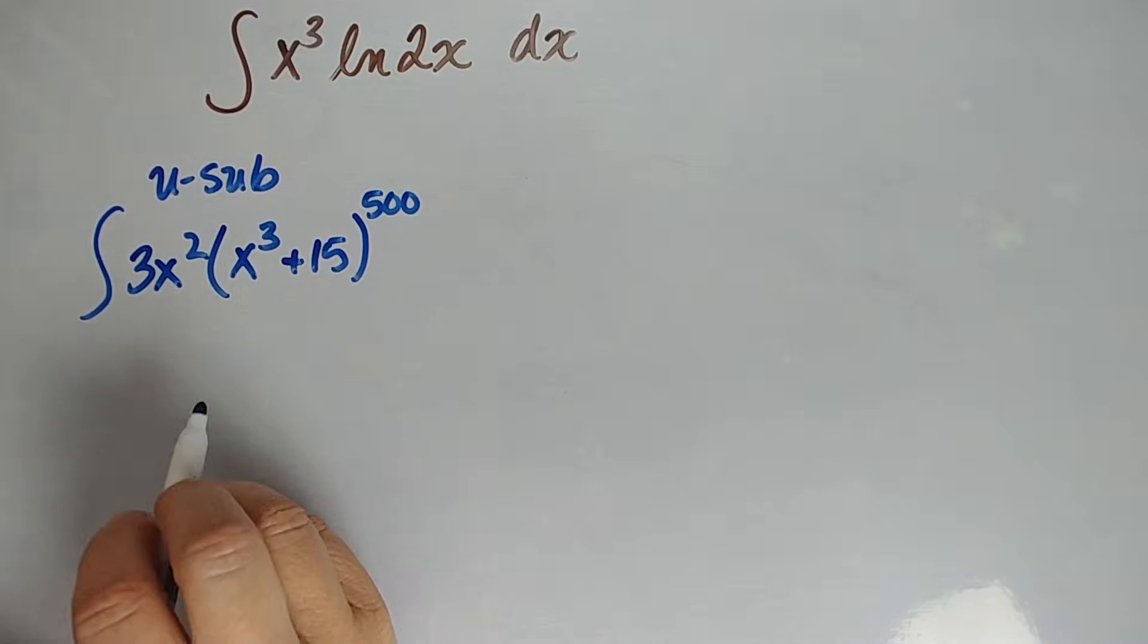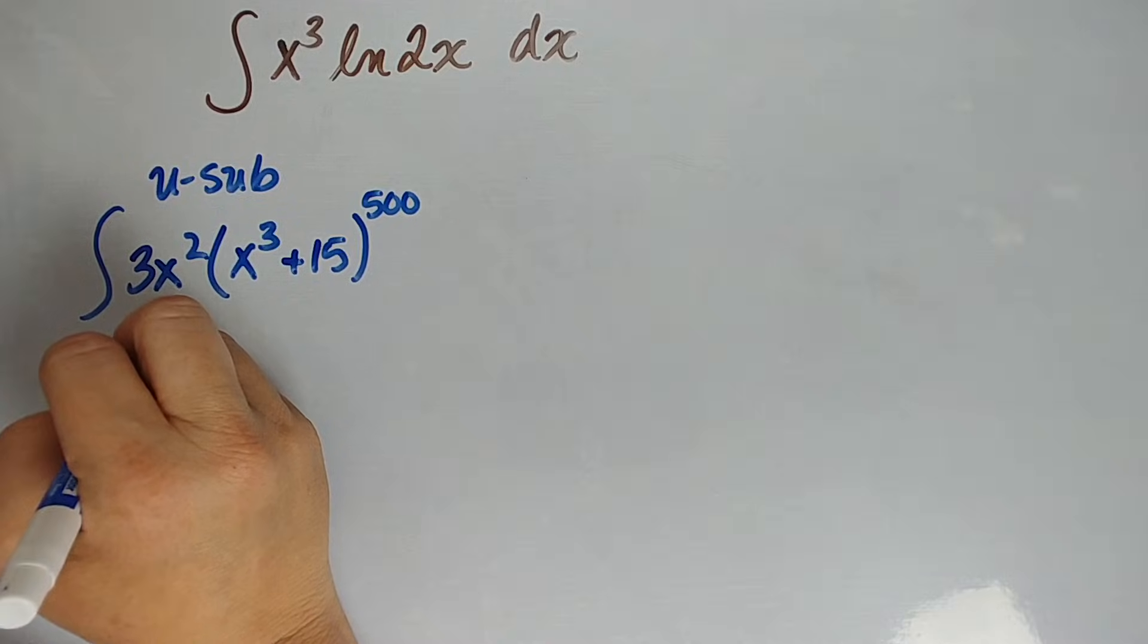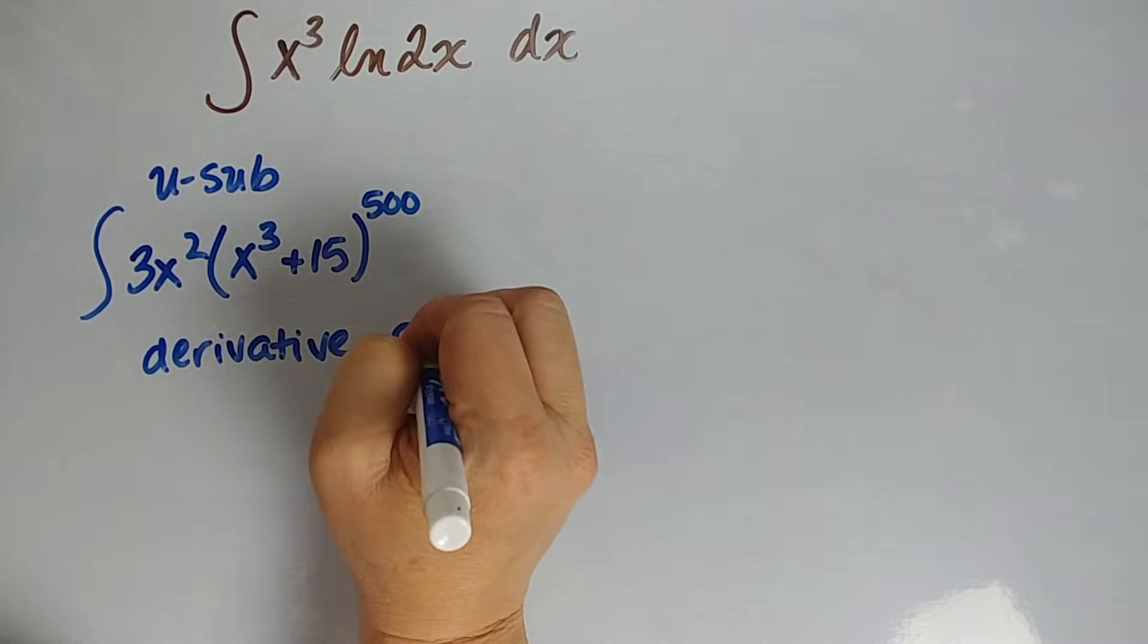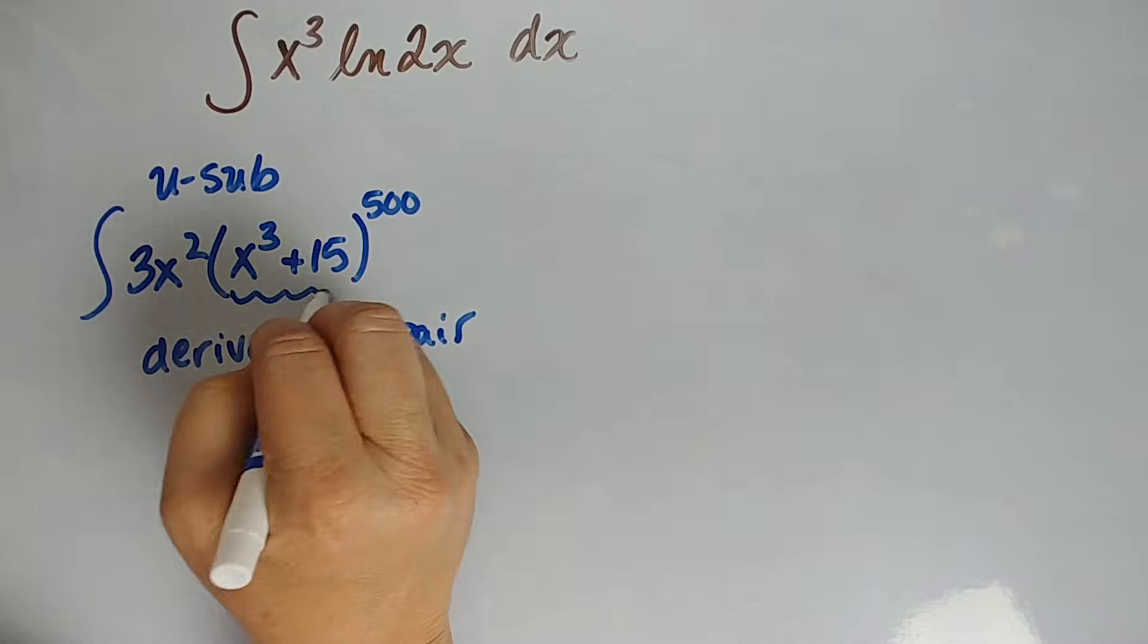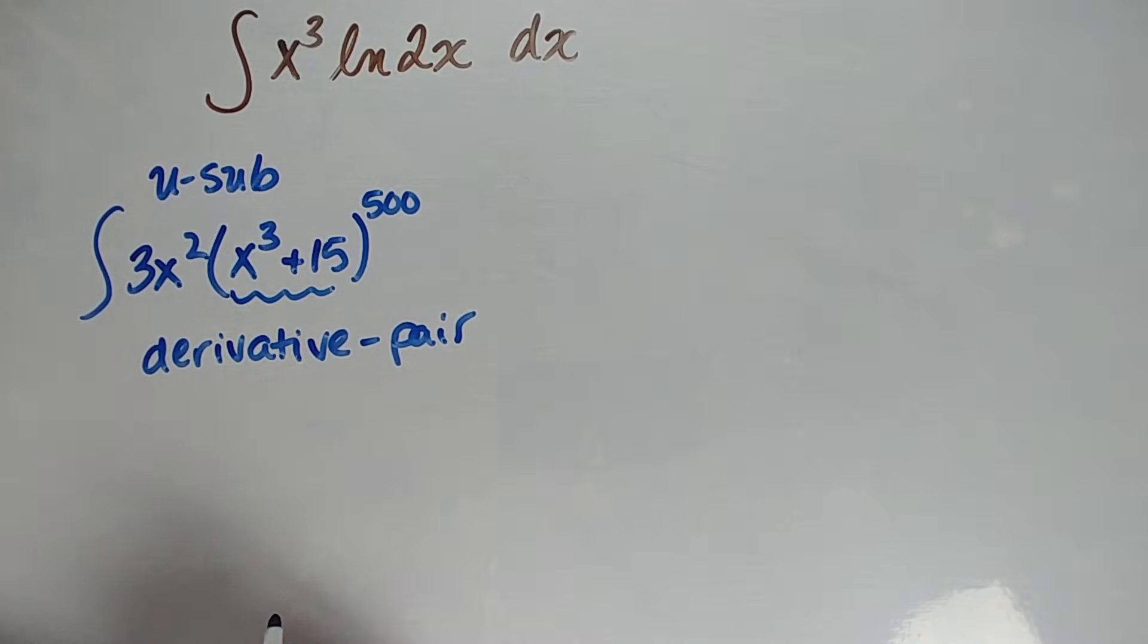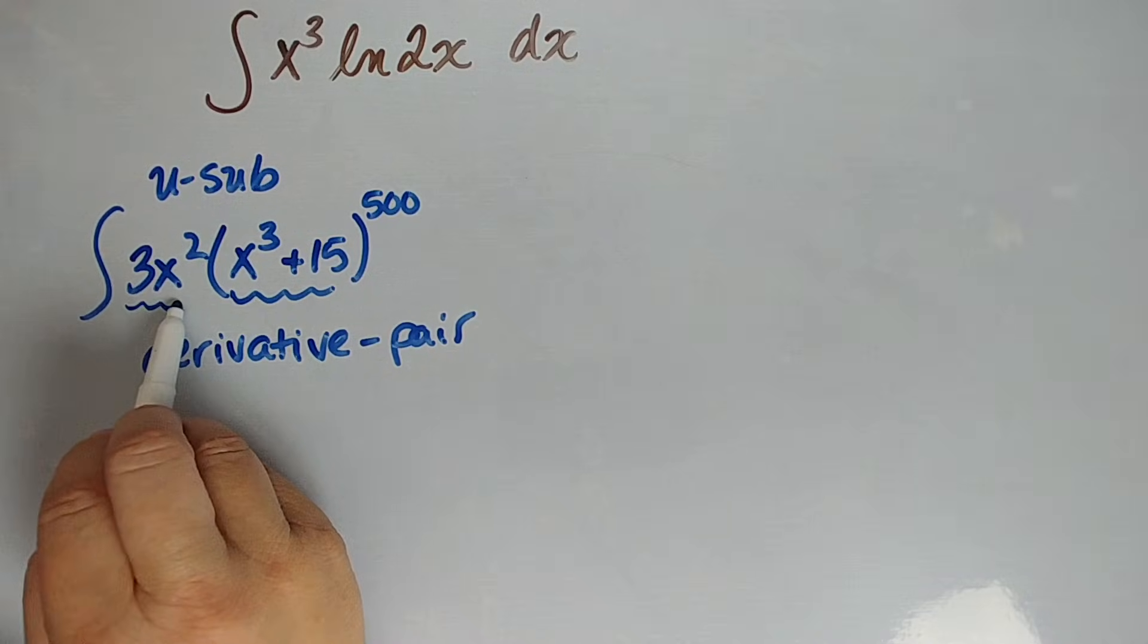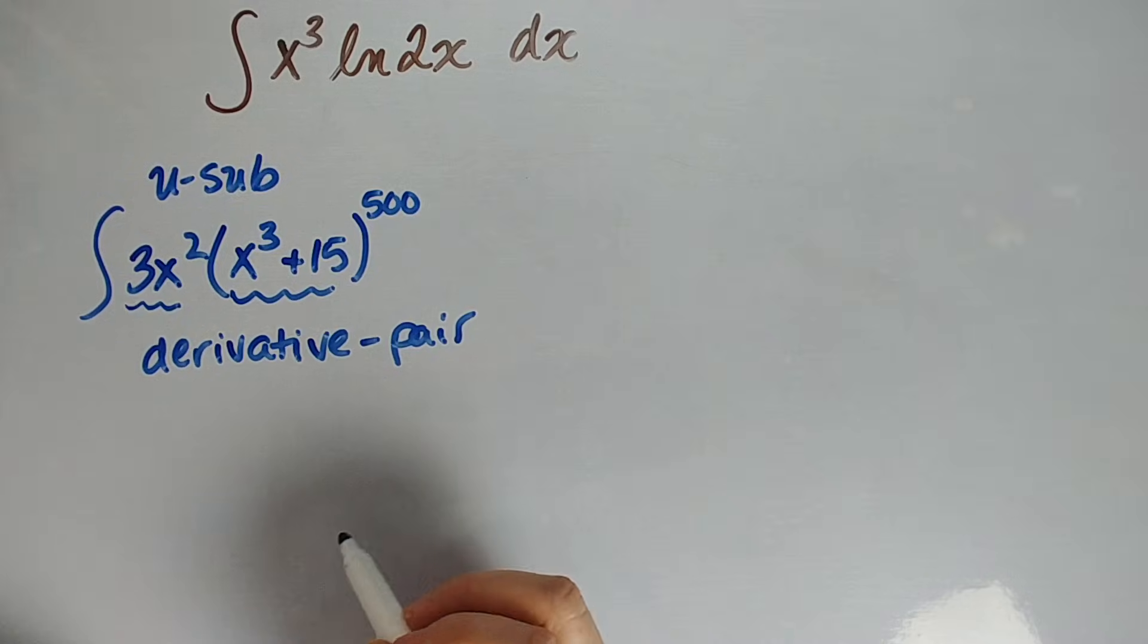What you want to look for is a derivative pair. So here, x cubed plus 15 is one portion. The derivative of this is 3x squared, and look, we have 3x squared out here. It doesn't have to match exactly; there can be a constant in the way, and you'll see some of those later.